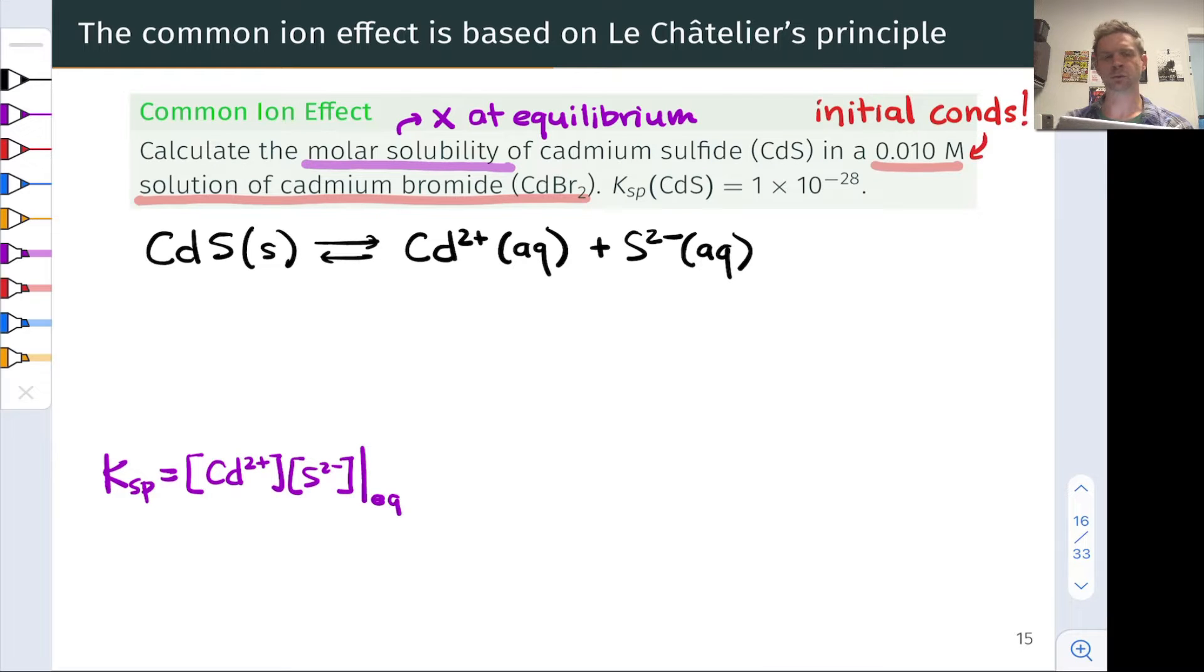One way we can think about this is we've got an initial condition of a cadmium bromide solution, and we're going to throw in cadmium sulfide solid tons and tons until we're saturated in cadmium sulfide. We're interested in the equilibrium situation after throwing in all of that cadmium sulfide solid.